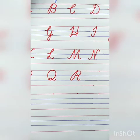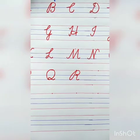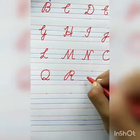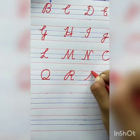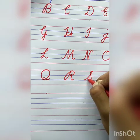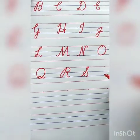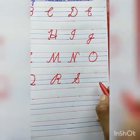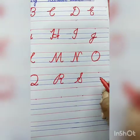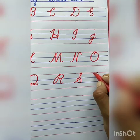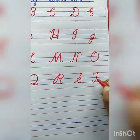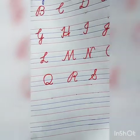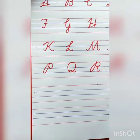Now tell me the next letter. S — see here: slanting line, loop, semicircle, stop here. S for sailor. The spelling of sailor: S-A-I-L-O-R, sailor. Now the next letter is T for tap. T-A-P, tap. Now tell me the next letter after T for tap.